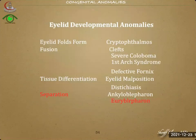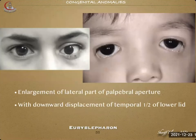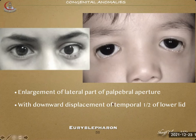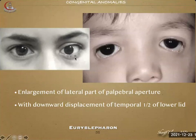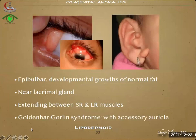Finally, euryblepharon refers not simply to failure of separation but rather an over-separation — an enlargement of the lateral part of the palpebral aperture with downward displacement of the temporal half of the lower lid. The lower lid widens laterally and it may be unilateral or bilateral. This is called euryblepharon, to separate it from ankyloblepharon.